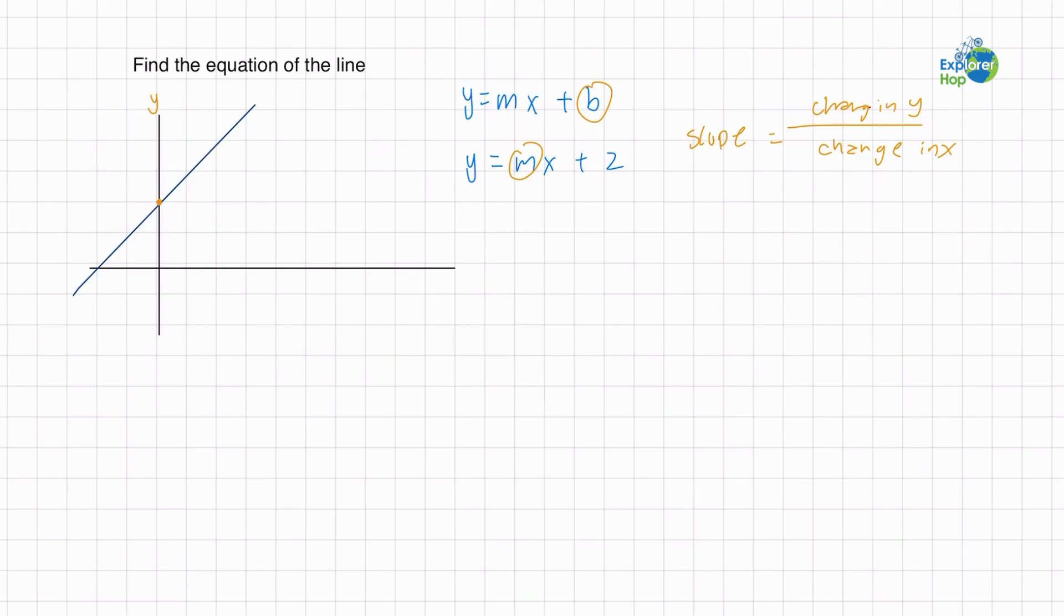Now let's look at the graph again. The change in y is 3 units, and the change in x is 3 units too. So 3 over 3 should be 1.